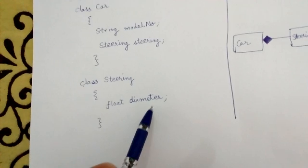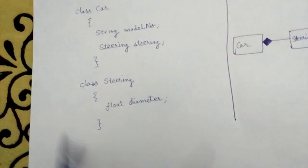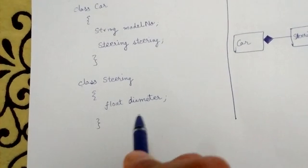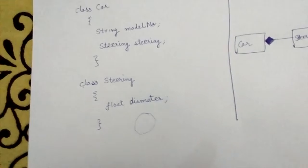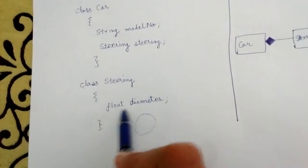The Steering class has a diameter attribute, assuming that the steering is completely circular in shape. Its data type is float.